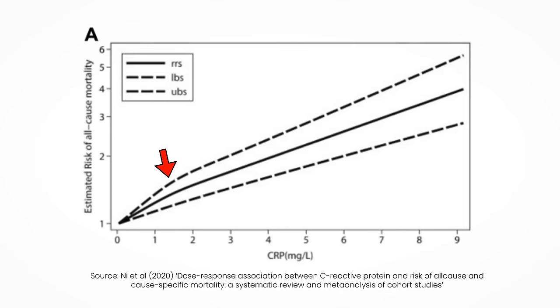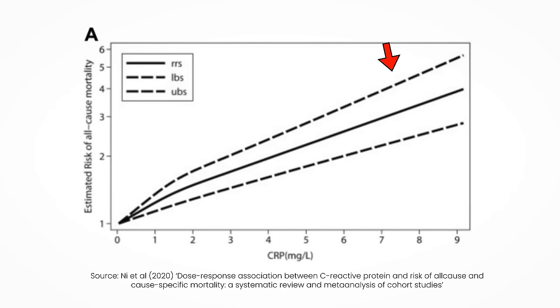A 2020 dose-response meta-analysis found that compared to low CRP less than 1 milligram per liter, high CRP over 3 milligrams per liter increased the relative risk of all-cause mortality by 75%, cardiovascular disease mortality by 102%, and cancer mortality by 32%. That's outside the reference range, which isn't surprising. However, a CRP of 1 to 3 milligrams per liter, which is inside the reference range, was already linked to a 30% higher risk of all-cause mortality and 43% higher risk of cardiovascular disease mortality compared to CRP below 1 milligram per liter. So in this study, anything above 1 milligram per liter was already linked to increased risk.